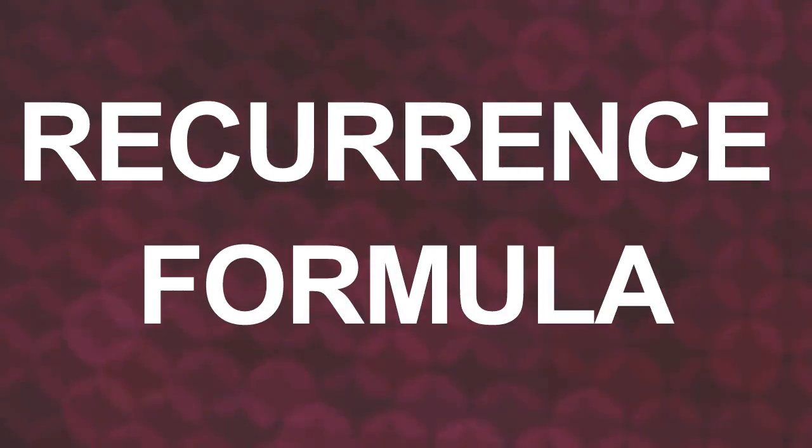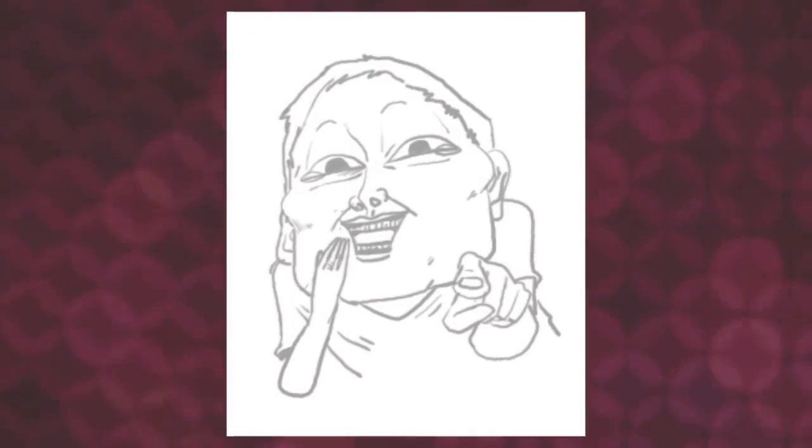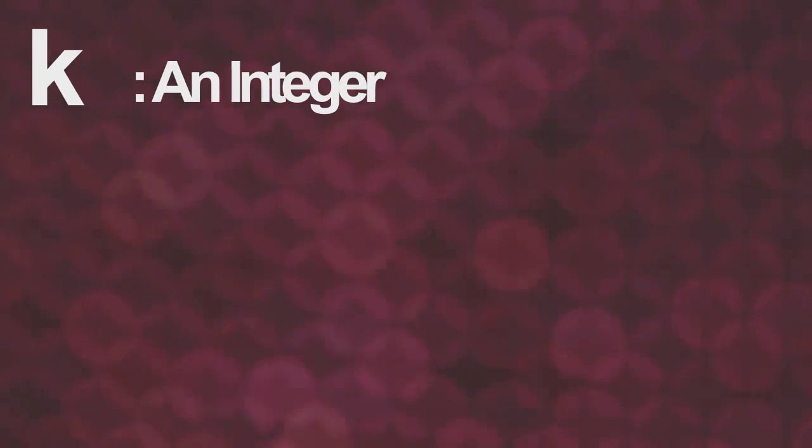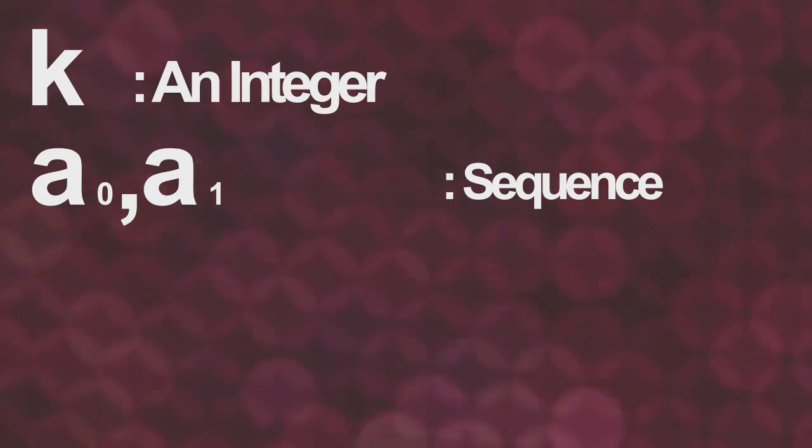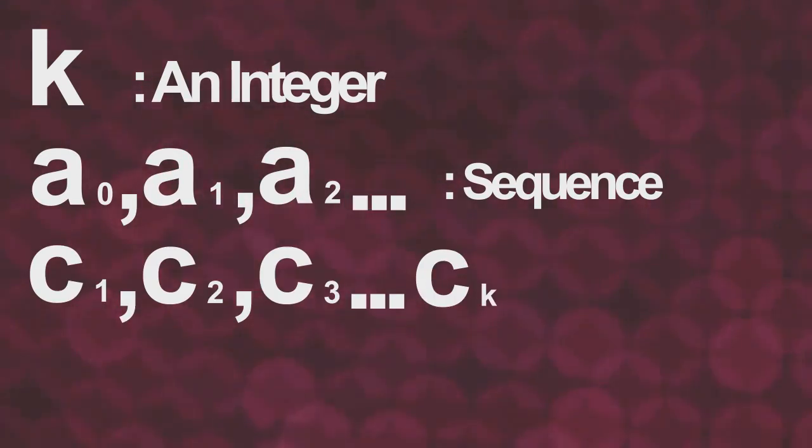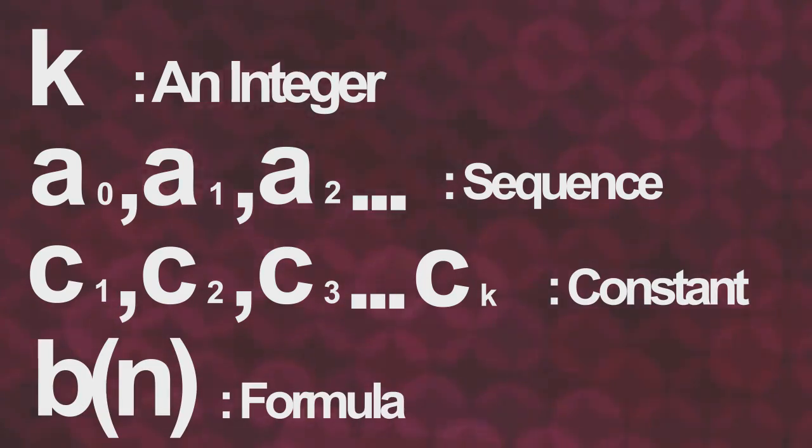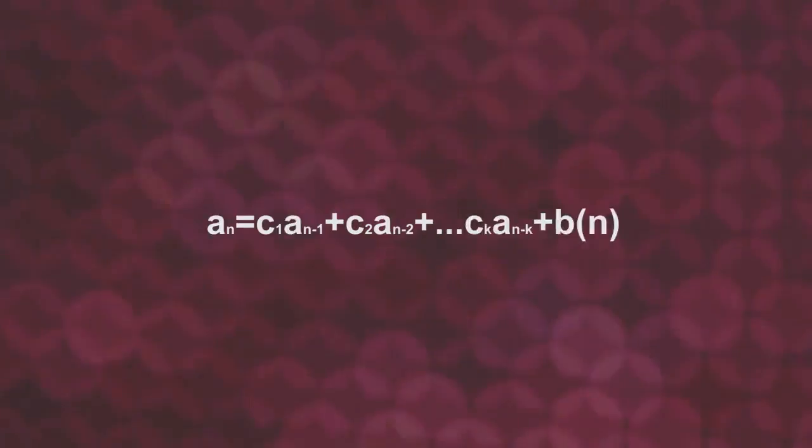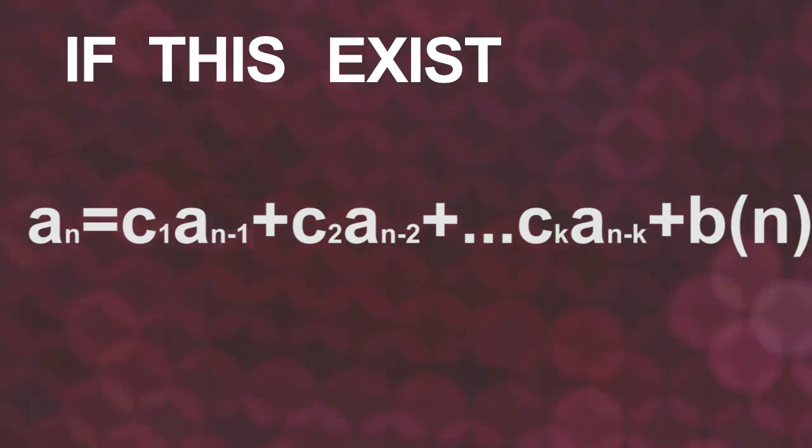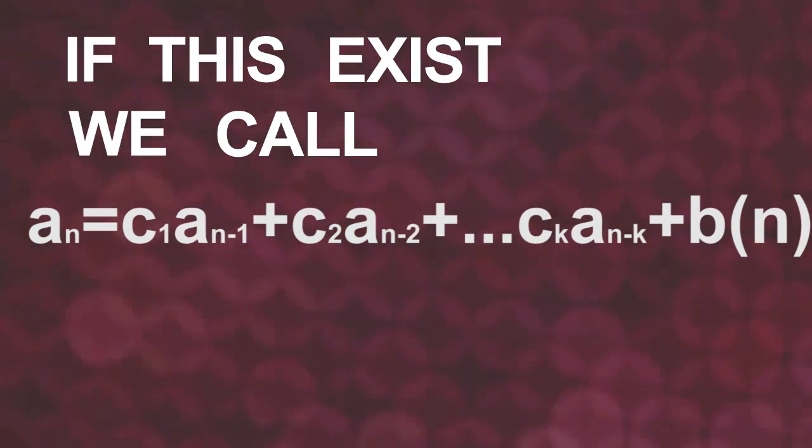First, some of you guys don't even know what recurrence formula is, and here is the definition of it. If k is an integer with specific number, for the sequence a0, a1, a2, there exists number c1, c2 to ck, and formula bn composed of n, which can be written as this, and if this exists, we call this recurrence formula.